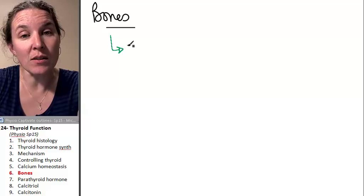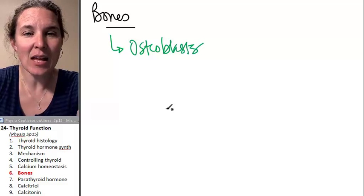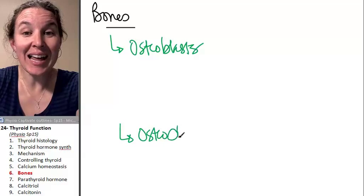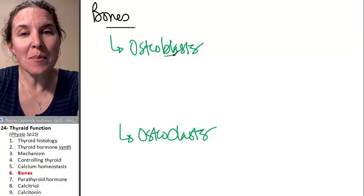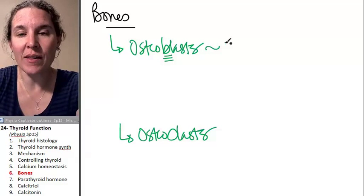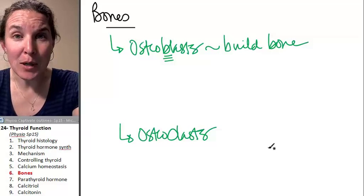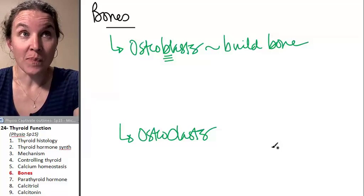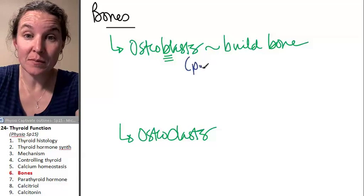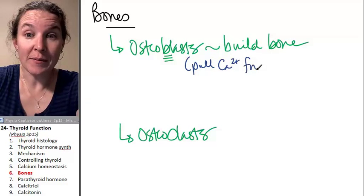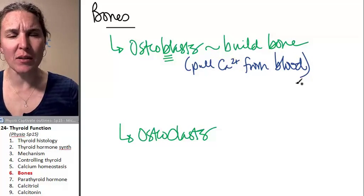So the two types of bone cells are the osteoblasts and the osteoclasts. You know this already from anatomy. The osteoblasts, remember, what do they do? They build bone. If they're going to build bone, what are they going to need? Calcium. So if they're super active, they're going to pull calcium from the blood and use that calcium to build more bone.